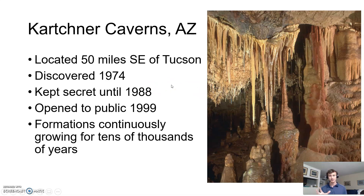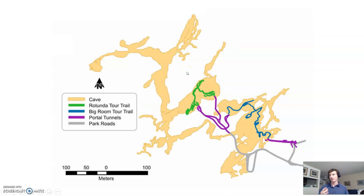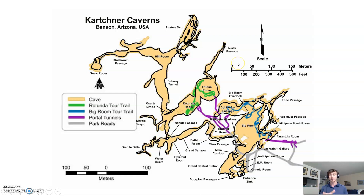Not touched by humans at all until somewhat recently — tens of thousands of years to grow. What we see here are stalactites, stalagmites, and columns going all the way up and down. There are about 2.5 miles total of passages. You can walk through the caverns, though you cannot access all of them. There are portal tunnels to help people get from one major area of the cave to another. The discovery: somebody apparently saw bubbles at the surface, some sort of gas escaping near the entrance sink, went down and started exploring, and found something a lot bigger than maybe they expected.